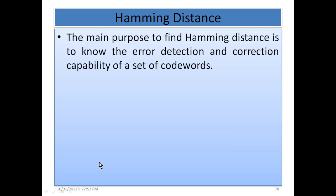The main purpose of finding Hamming distance is to determine the error detection and correction capability of a set of code words. Hamming distance helps us determine the error detection and correction capability of a code word. We will see how it is used in the next slides.